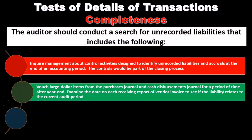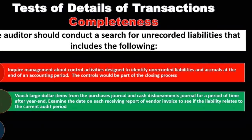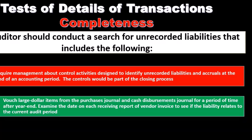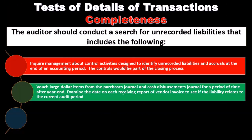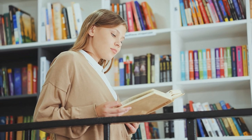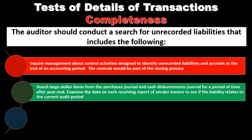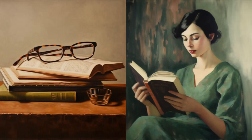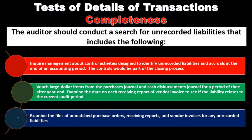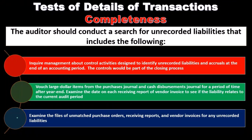Examine the data on each receiving report and vendor invoice to see if the liability relates to the current audit period. The receiving report is typically the triggering document indicating when an item was actually received, so we verify that items were recorded in the correct time period in accordance with receiving reports.